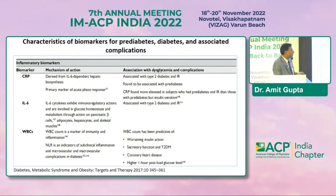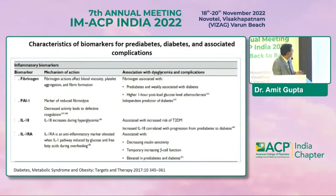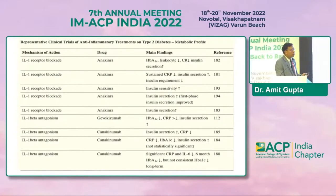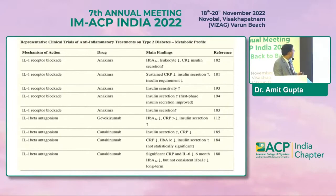WBC count is predictive of worsening insulin action, secretory function, type 2 diabetes, and coronary heart disease. When a patient presents with elevated TLC without obvious reason, sometimes it is chronic inflammation contributing to the inflammatory milieu. Anakinra, an IL-1 receptor blocker, has been shown through various studies to have anti-inflammatory action helping glycemic management. IL-1-beta antagonists like gevokizumab and canakinumab are also antibody-mediated drugs targeting inflammation and diabetes.